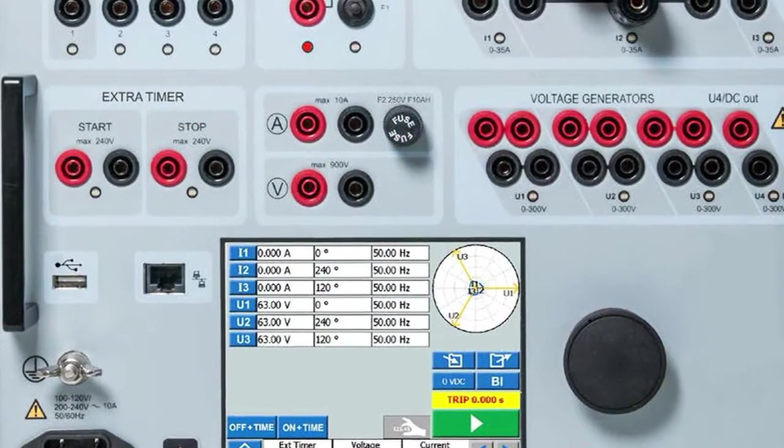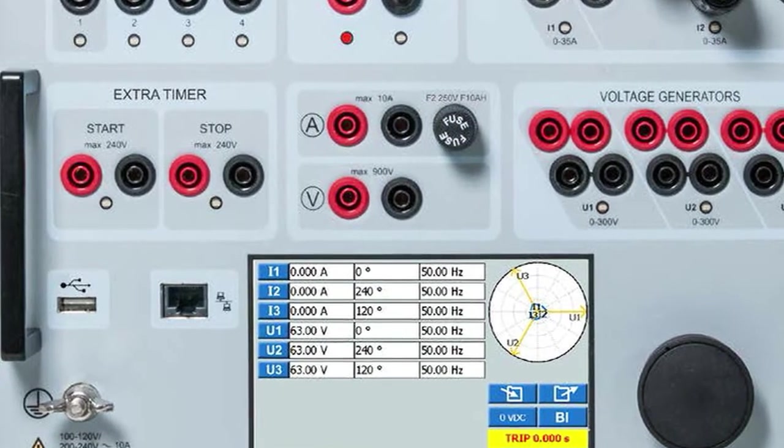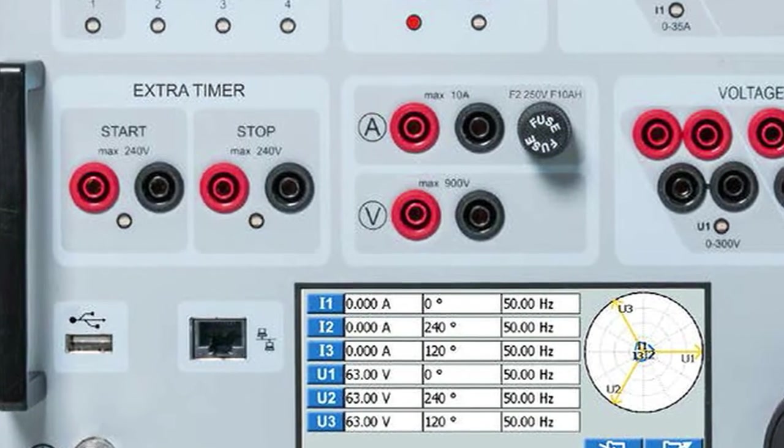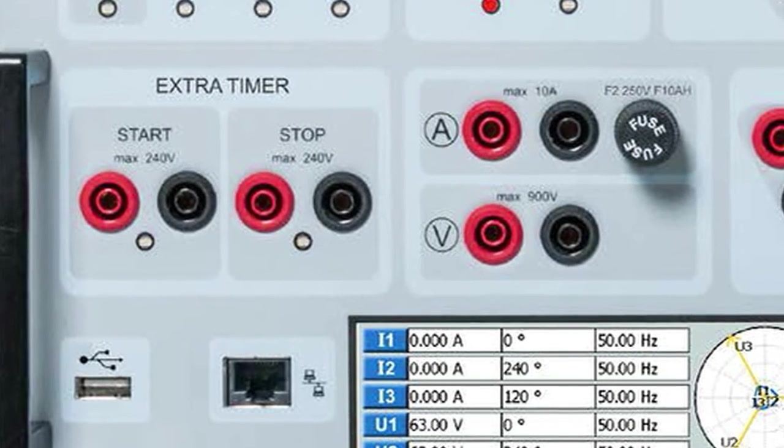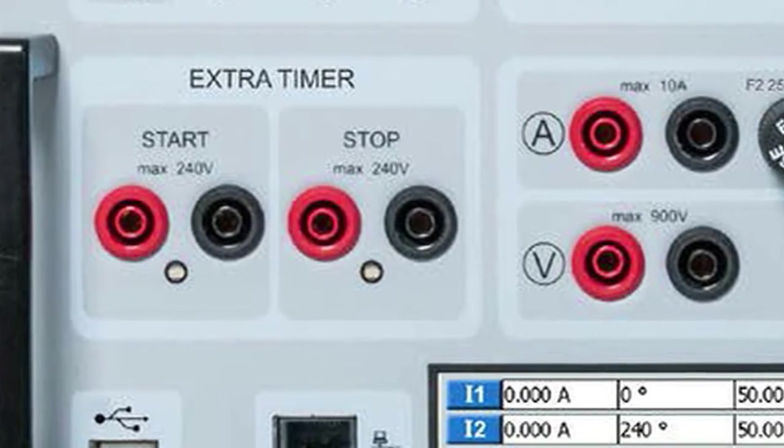Also included is an extra timer which has a separate start and stop input. It can be used to measure both external cycles and sequences initiated by the Sverker. The measured time appears on the display and each input can be set to respond to the presence or absence of voltage AC or DC at a contact.